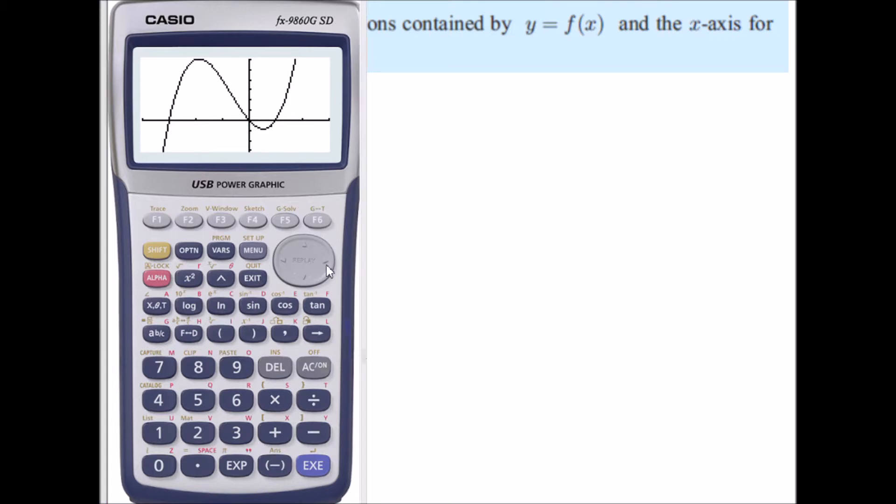To find those values I'll go to G-solve, then F6 and then my integral sign is there. And now I need to set my x-intercepts. So negative 3 is the lower boundary. I'm just going to work out this integral here. So up to 0 is my upper boundary. So I get 11.25.